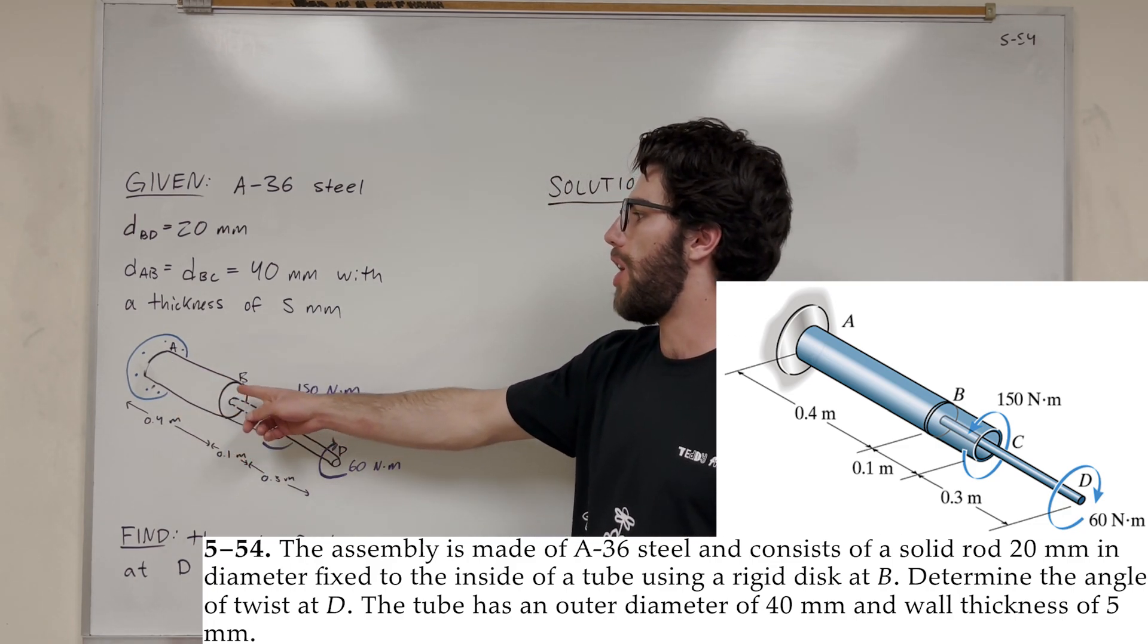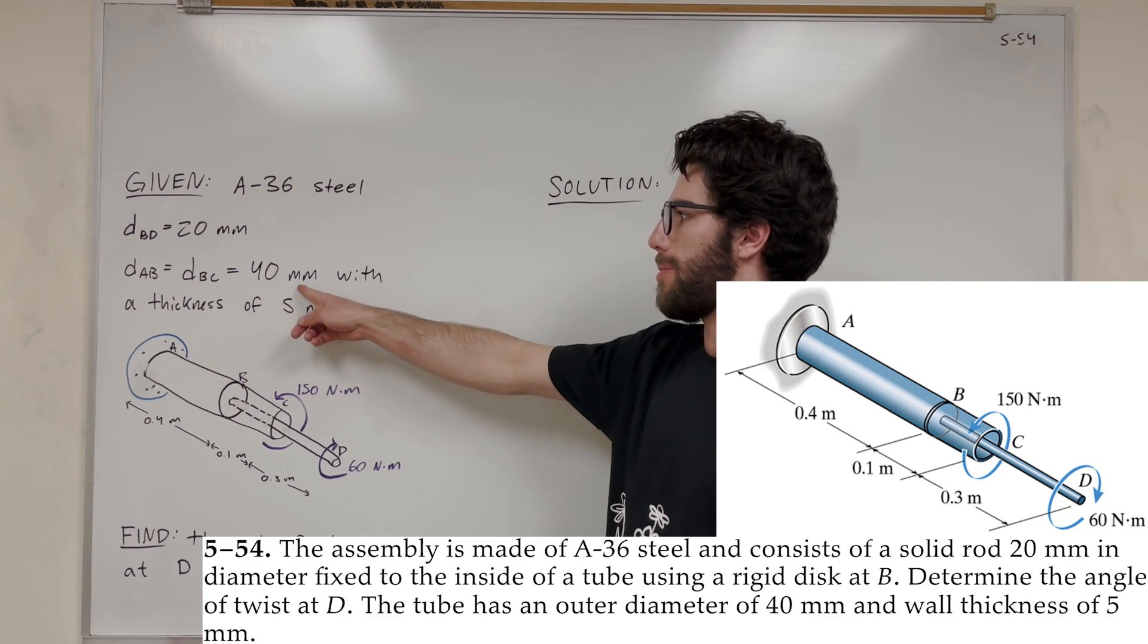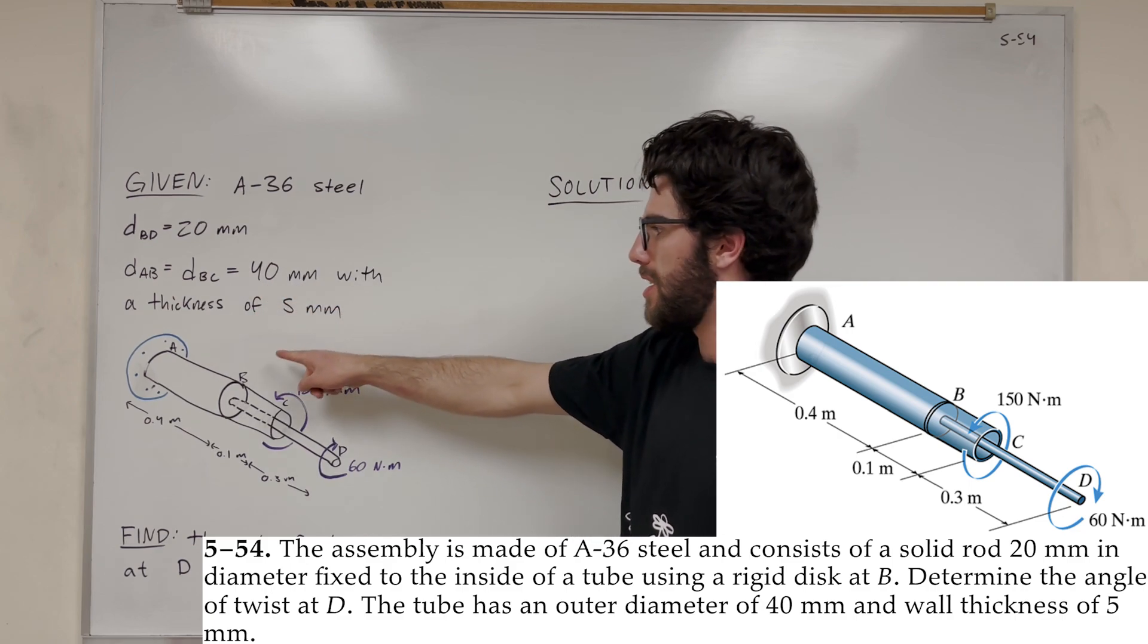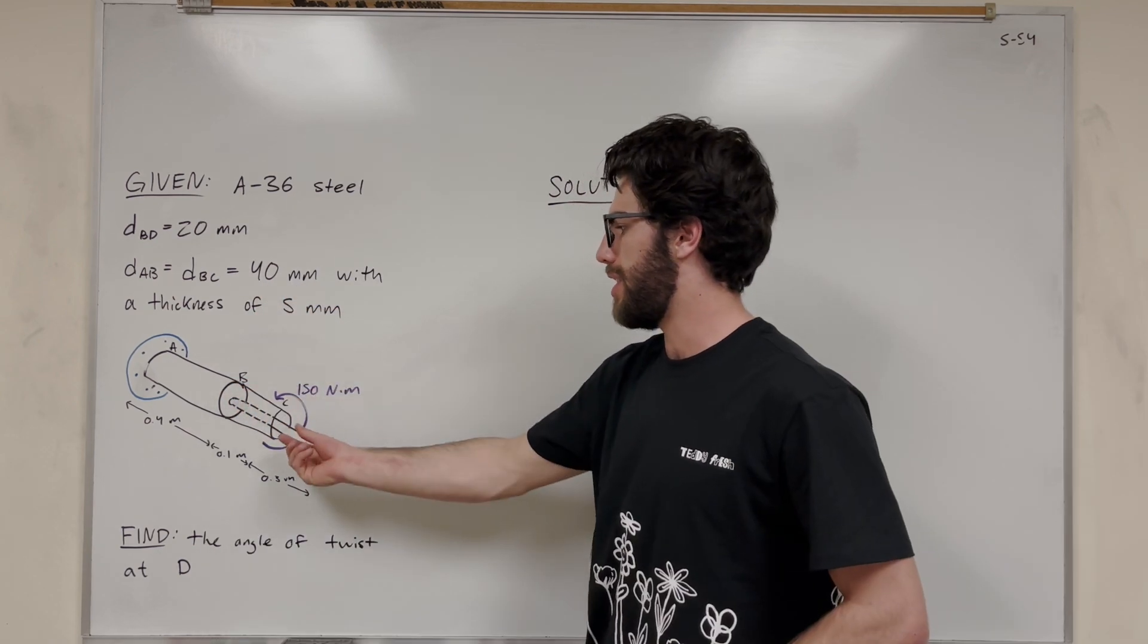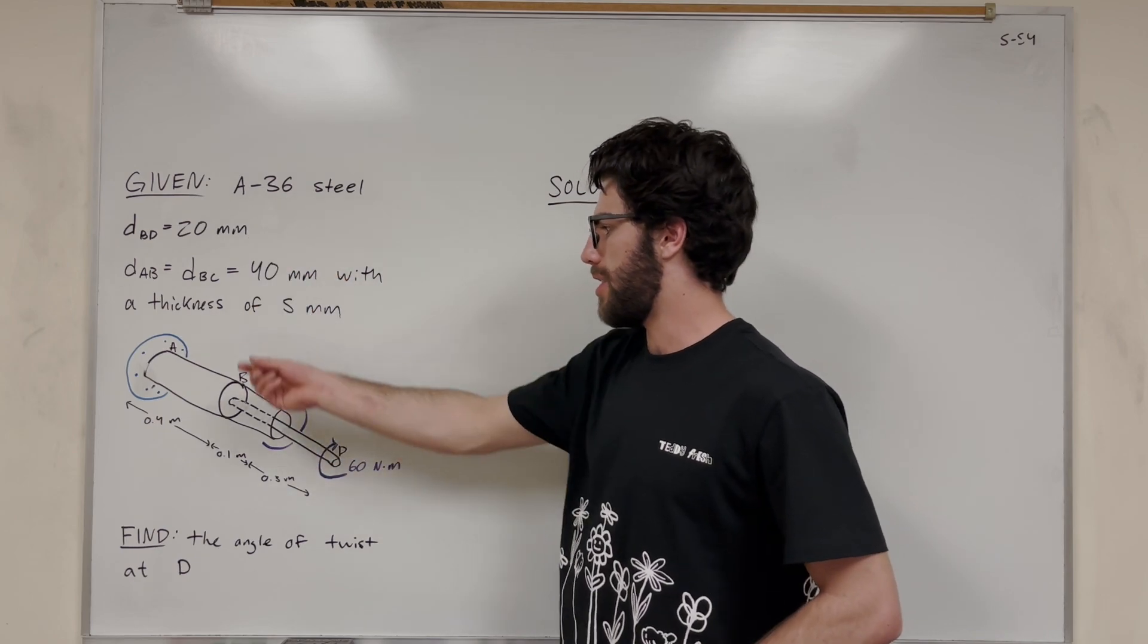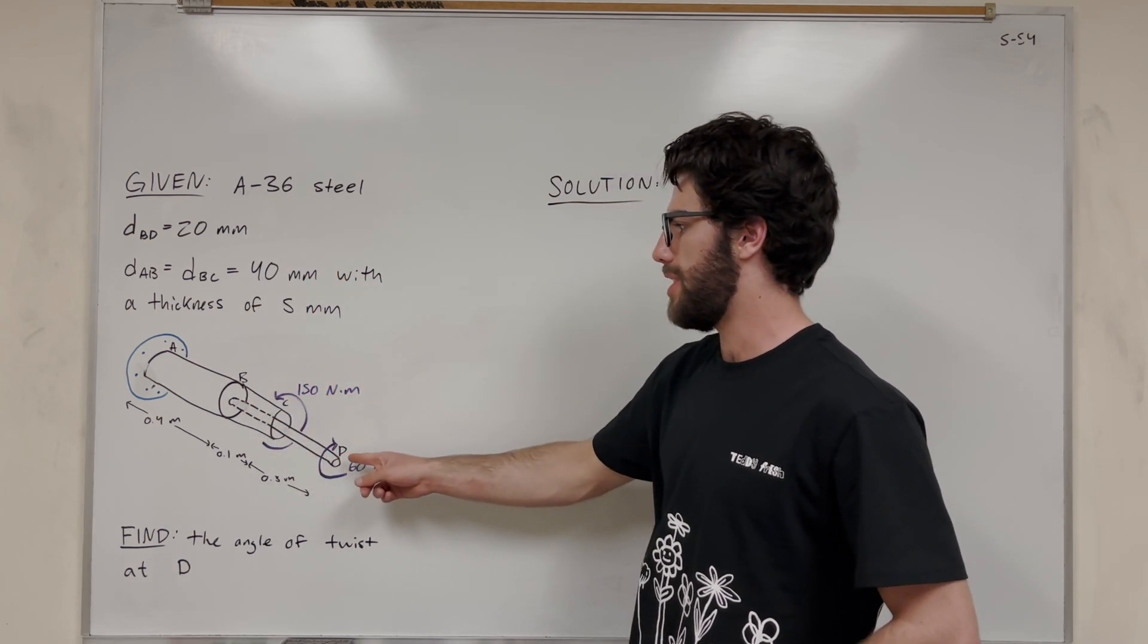From A to B, it's a hollow rod with a diameter of 40 millimeters and a thickness of 5 millimeters. Then it's connected here at B to this inner rod of 20 millimeters diameter, and that goes all the way up to D.